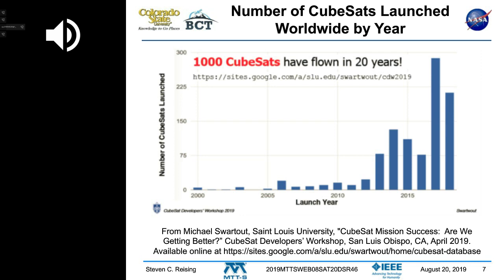Before about 2013, there were 25 or fewer CubeSats launched each year. Then it really increased. There's a huge peak in 2017 — a lot of people know about the Planet CubeSat deployment where they deployed 100 satellites, launched from India with the PSLV rocket.